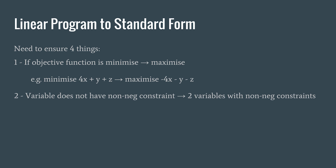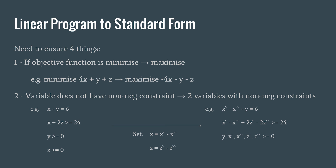Number two: if a variable doesn't have non-negative constraints, we need to give it non-negative constraints. We do this by replacing it with two other variables. So in this case, x and z don't have non-negative constraints, and therefore we set x to x-prime minus x-double-prime, and we do the same for z. Then we simply substitute it back into the original equation.